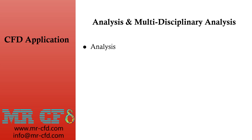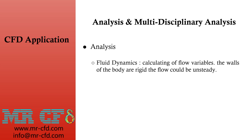One-way FSI can be used in aerospace projects. For example, you have a wing and you want to see how the airflow deflects the wing under the normal force around it — this is a simple one-way FSI. In this multidisciplinary analysis, fluid dynamics calculates the flow variables while the body walls are treated as rigid, and we only observe the forces generated by the fluid on the walls, not the effect of structural deflection.